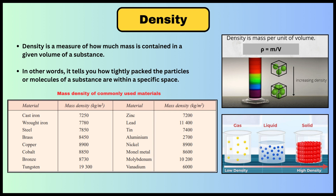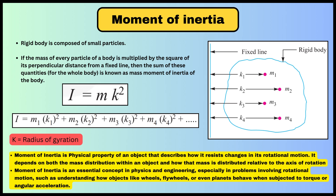The next term is moment of inertia, generally denoted by I. It is the product of mass and k², where k is the radius of gyration. Moment of inertia plays a very important role in understanding how objects like a wheel, flywheel, or even a planet behave when subjected to torque or angular acceleration.